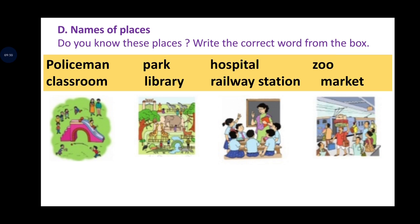Now look at Question D: Names of Places. In our previous questions we read names of people, then names of things, then names of animals and birds. All of those had names, and they all are called naming words. Now we will learn names of places.